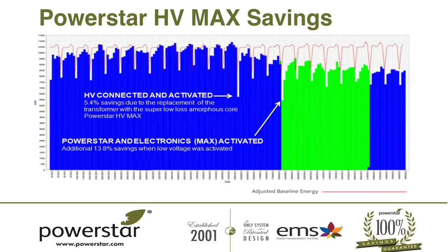This graph shows regression analysis IPMVP on a PowerStar HV Max installation. The red line is the regression analysis. At the changeover point from the old transformer to PowerStar HV Max, we saw a 5.4% energy saving just on the amorphous core technology. After running three weeks of verification, we then energised the voltage optimisation and got a further 13.8% energy saving — totalling over 19% energy saving on a PowerStar HV Max. Not unusual based on the typical voltages we see in Australia. This is in a large supermarket — and the average savings on HV gear are even higher than on LV gear.